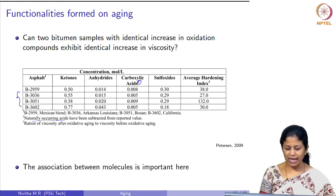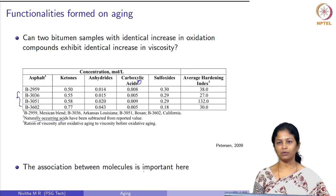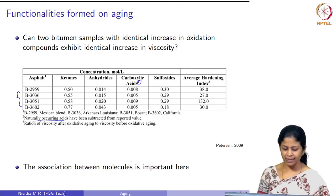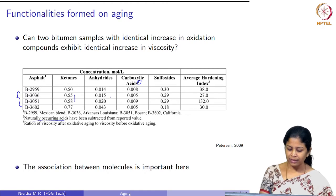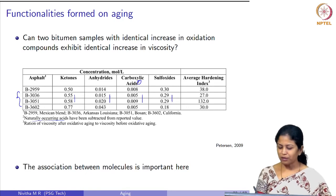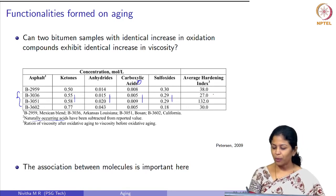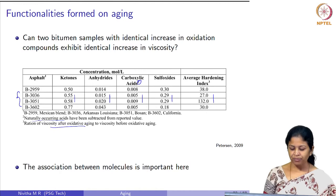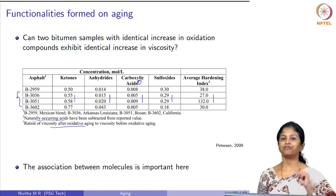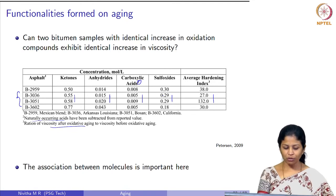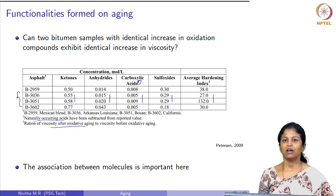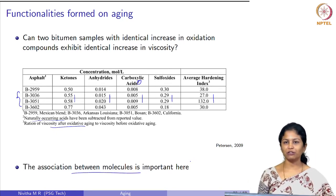The ketone values for B3036 and B3051 are almost identical, the anhydrides are close, carboxylic acids show a small difference, and sulfoxides are exactly the same. However, the average hardening index — the ratio of viscosity after oxidative aging to viscosity before oxidative aging — is different for these two materials. Two types of bitumen having similar oxidation products exhibit different increases in stiffness, confirming that association between molecules is very important.